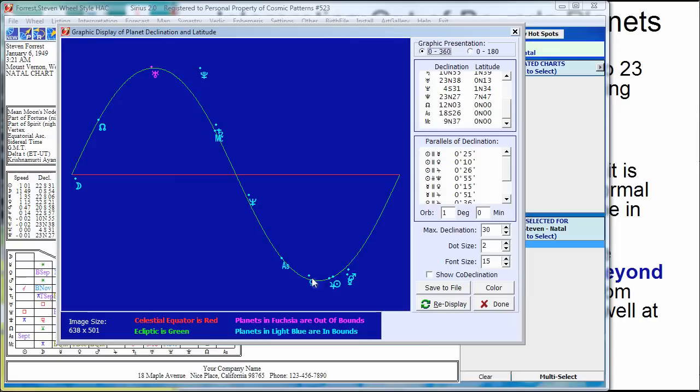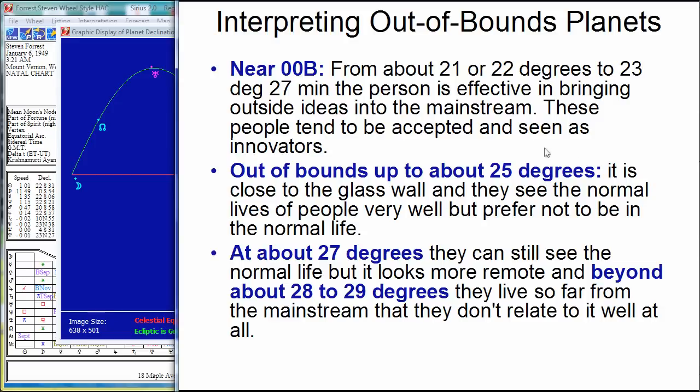So they're connectors, and being on this side, not out of bounds, they're able to bring that information. They want to work within the system. So that's what the near out of bounds planets do. See and hear right through that glass wall, but they're inside the wall within the mainstream. Now, so they are innovators.